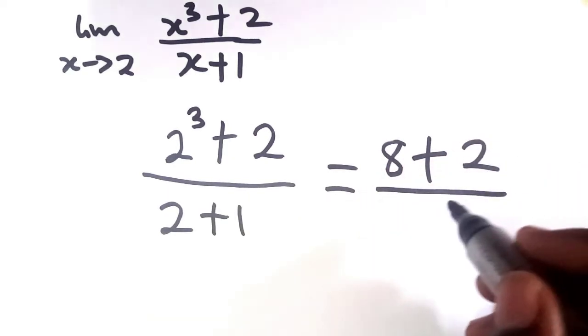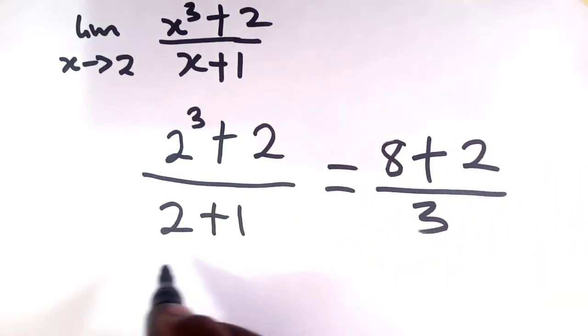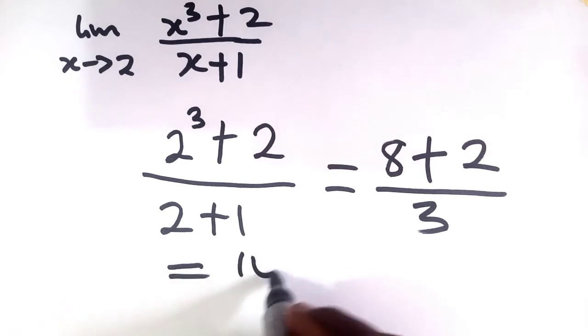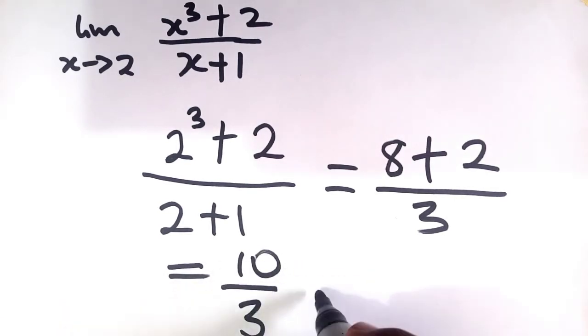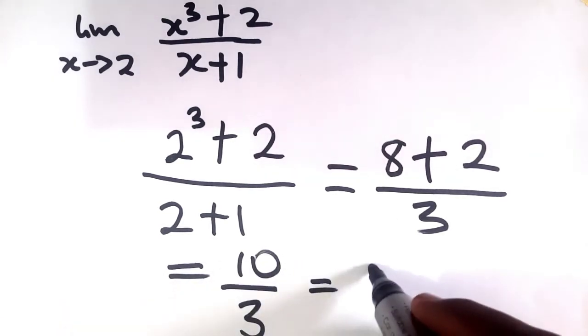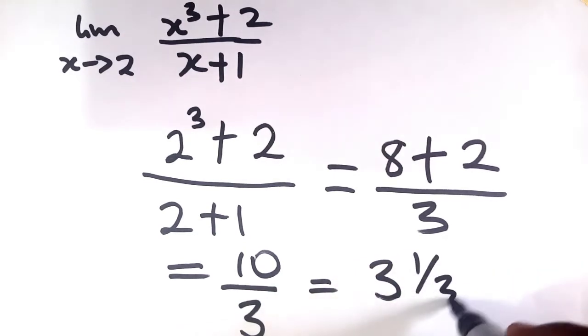So we'll have 8 plus 2 over 2 plus 1 is 3, so we'll end up having 10 over 3, which is equal to 3 and 1/3. So either one of them, 10 over 3 or 3 and 1/3, is our answer where we found the limit as x tends to 2.